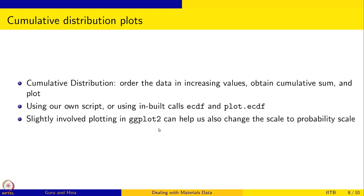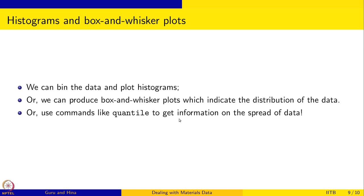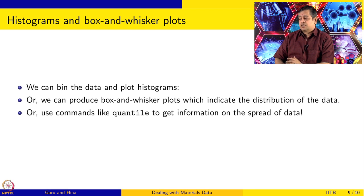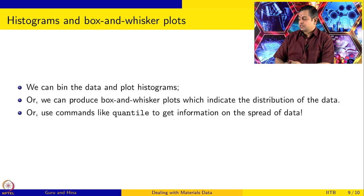Changing the y-axis to probability scale is just the first step, and we will see an example of how to do this. The next set of plots are histograms and box and whisker plots. You can bin the data and present histograms — these are very important, especially if the distribution is not normal or if you want to give explicit information about the distribution. Box and whisker plots also indicate the distribution of the data, and you can use commands like quantile to get the spread.